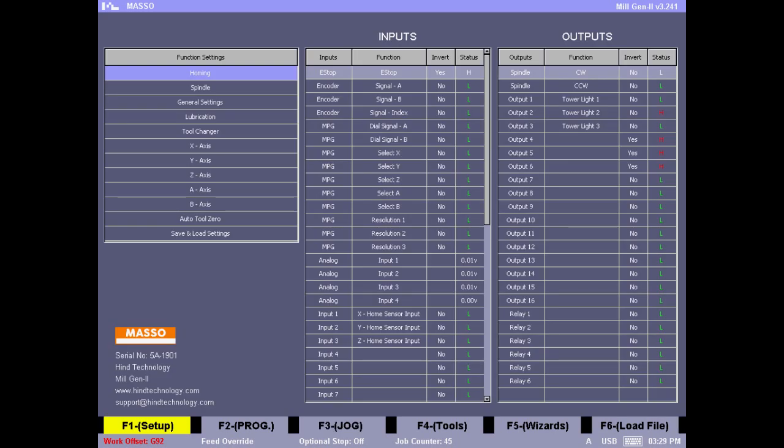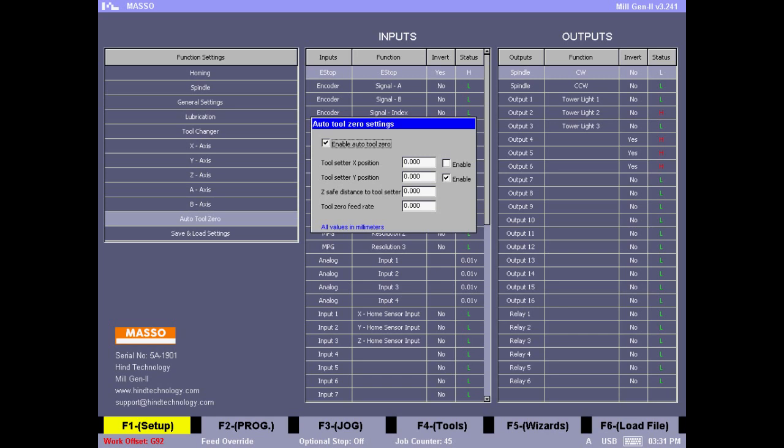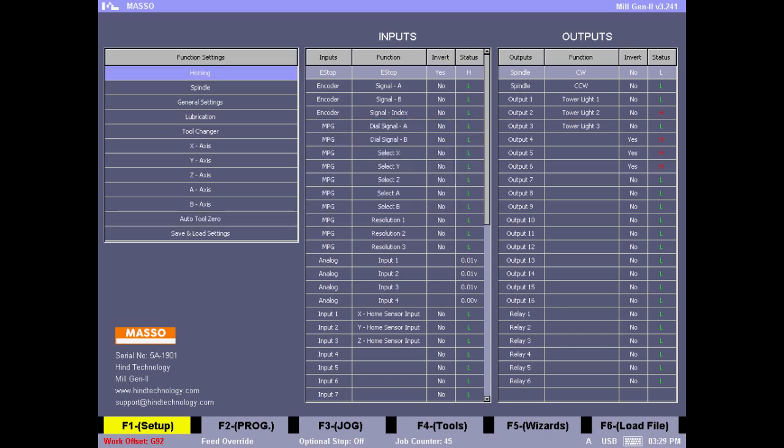Go back to F1 screen, go to auto tool zero, and make sure to enable automatic tool zero. Now assign the same values in the X and Y locations. Enter a Z safe distance—this is the distance you'd like to rapid to where you know your tool won't be long enough to hit the tool setter. Finally, put in the feed rate at which you'd like to zero your tool.